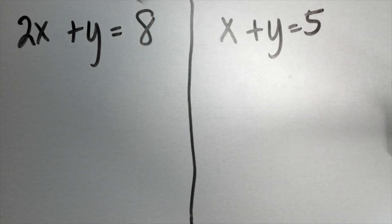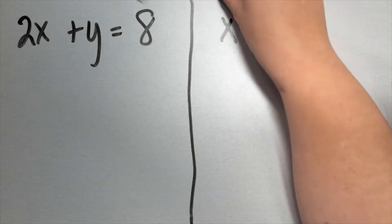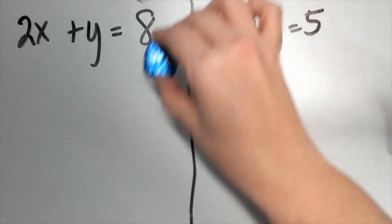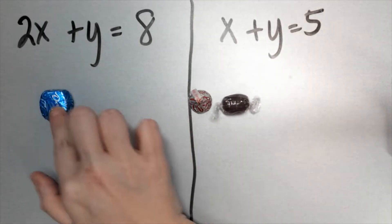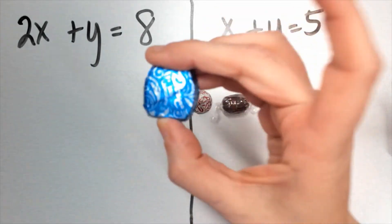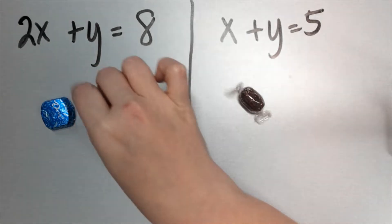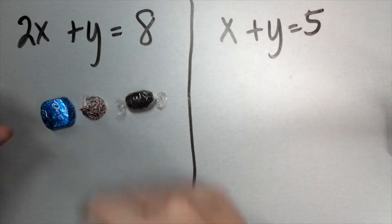Before I teach you the next method, which is simple linear combination, I want to help you understand why it works. The only manipulatives I have are candy. The dove chocolates are X's, the candy cane Hershey kisses are Y's, and the root beer barrels are going to be ones.